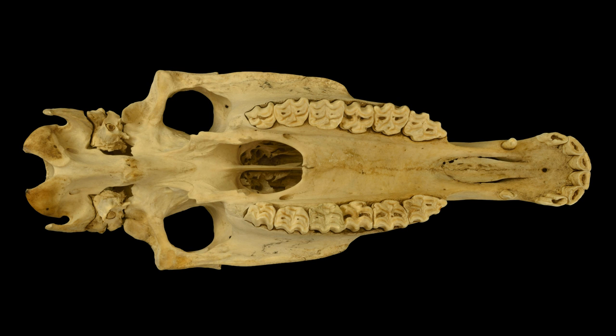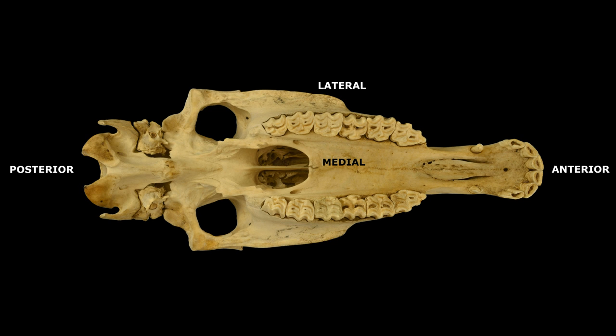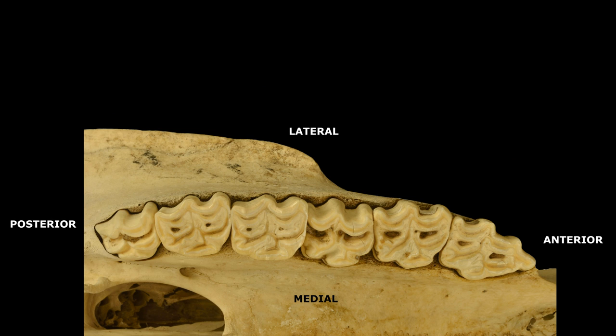Now let's flip the skull on its head and look at the occlusal view, with the side that shows the chewing surface of the teeth. Notice that the front of the skull, the anterior, is still to the right, and the posterior or back is to the left. Also in this view, right lateral is towards the top, and medial is toward the midline of the skull. We can see the teeth a little bit better if we zoom in on this occlusal view.